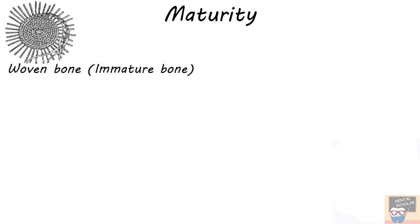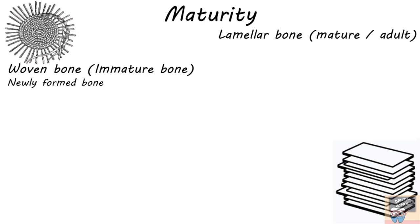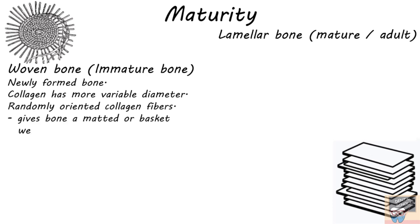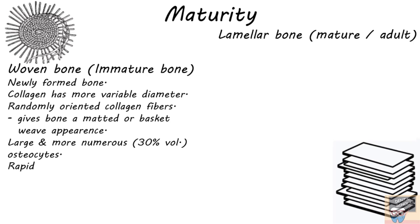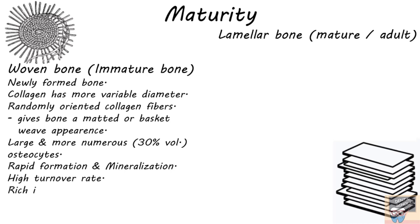Based on maturity, bone may be classified as woven bone or immature bone, and lamellar bone or mature adult bone. Woven bone is newly formed bone; its collagen has a more variable diameter and the fibers are randomly oriented, giving it a matted or basket-weave appearance. Osteocytes in woven bone are large and numerous, occupying about 30% of the bone volume. Woven bone shows rapid formation and mineralization, has a higher turnover rate, is rich in acid phosphoprotein and bone sialoprotein (BSP), and is the first bone to form at the site of healing.